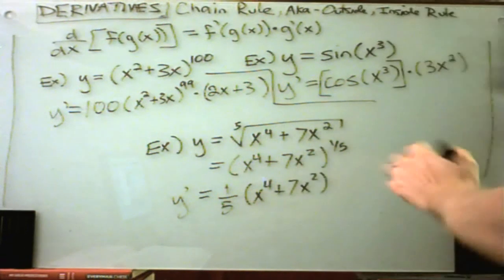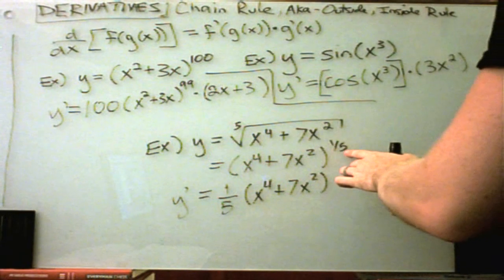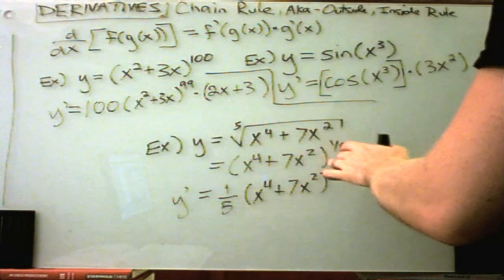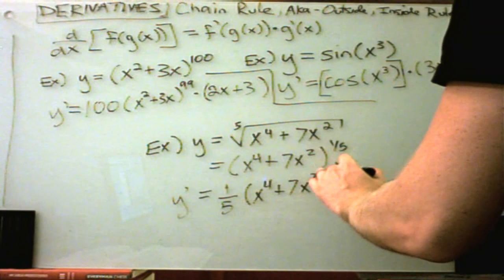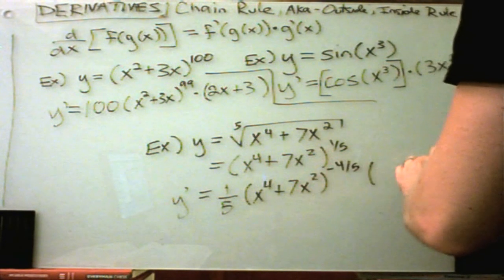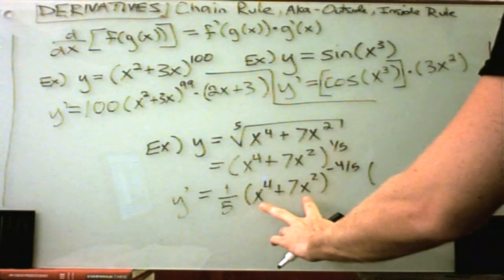I'll take one away from this power. So if you're subtracting one, you'll be subtracting equivalently 5 over 5. So you'll get negative 4 fifths. And again, we multiply now by the derivative of the inside.